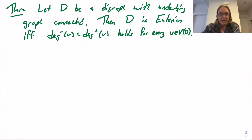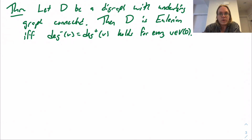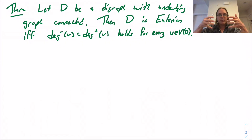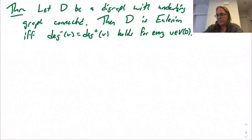This looks really very much like the undirected case. A connected undirected graph is Eulerian if and only if every vertex has even degree, just because each visit to a vertex uses two edges. Here in the directed setting, now there are edges that go in and edges that come out, but if you want an Euler walk, every time you come in you have to go out, so you'd better have this balanced property that in-degree equals out-degree. The other direction is going to require a proof.